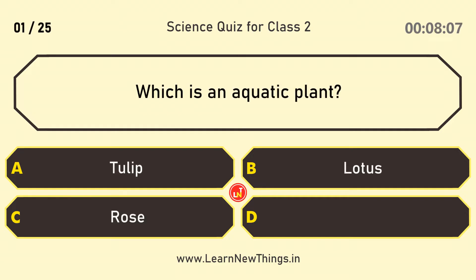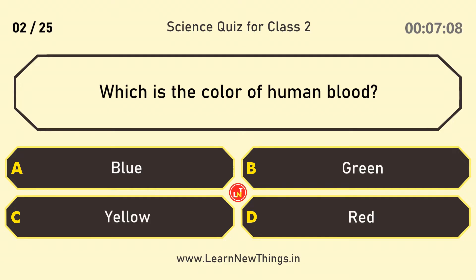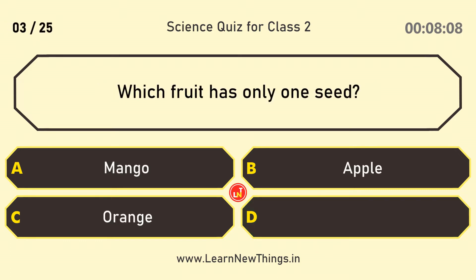Which is an aquatic plant? Lotus. Which is the color of human blood? Red. Which fruit has only one seed? Mango.